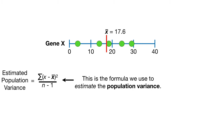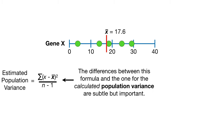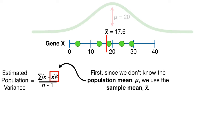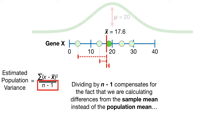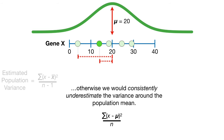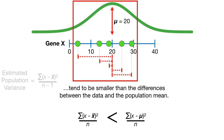This is the formula we use to estimate the population variance. Because we almost always work with a relatively small sample and not the entire population, this is the formula we will use most of the time. The differences between this formula and the one for the calculated population variance are subtle but important. First, since we don't know the population mean, mu, we use the sample mean, x-bar. Second, we are dividing by n-1 instead of n. Dividing by n-1 compensates for the fact that we are calculating the differences from the sample mean instead of the population mean. Otherwise, we would consistently underestimate the variance around the population mean. This is because the differences between the data and the sample mean tend to be smaller than the differences between the data and the population mean.